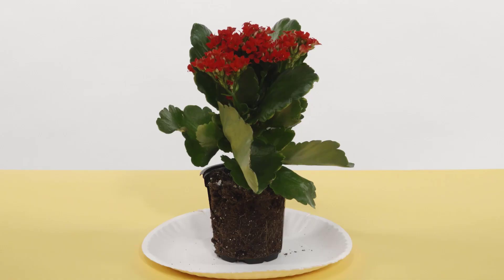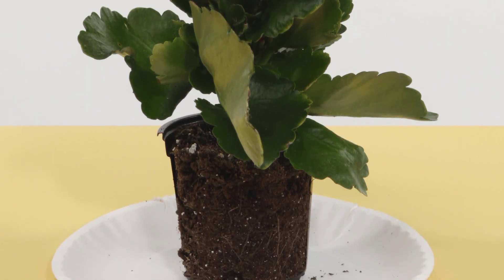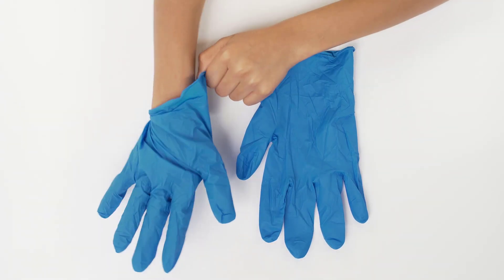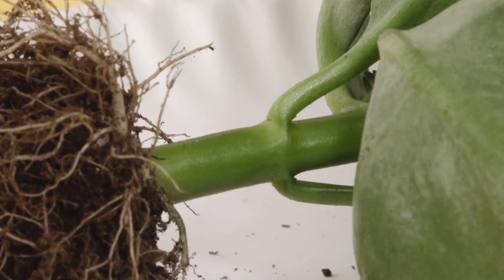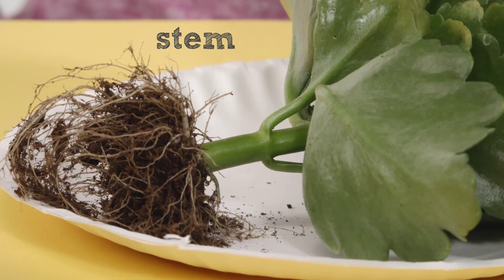First, choose three different plant parts to observe. In this video, we're going to observe the stem, the leaf, and the roots. Before handling the plants, be sure you're wearing gloves. Click on the stem cell in the data table to observe the plant stem. What is the color and shape of the stem? Write the word stem in the left column of your notebook and draw a picture of the stem below the word. When you've finished, click Continue.